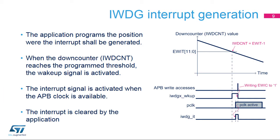As shown in the figure, the application can program at which position the interrupt shall be generated. When the down-counter IWDCNT reaches the programmed threshold, the wake-up signal is activated to wake up the system from stop mode. The interrupt signal is activated as soon as the APB clock is available, allowing the CA7 to serve this interrupt. At the end of the interrupt service routine, the application must clear the interrupt by writing the EWIC bit to 1.